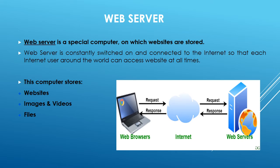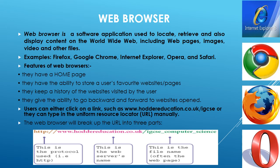A web server is a special computer on which websites are stored. It is constantly switched on and connected to the internet so that each internet user around the world can access websites at all times. The computer stores websites, images, videos, and other files. A web browser is a software application used to locate, retrieve, and display content on the World Wide Web, including web pages, images, videos, and other files.